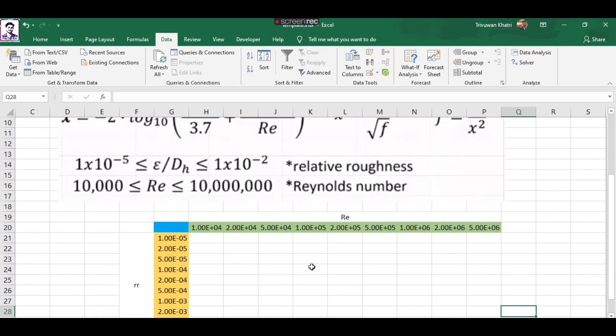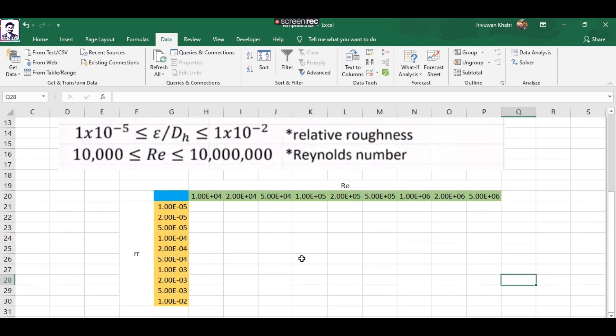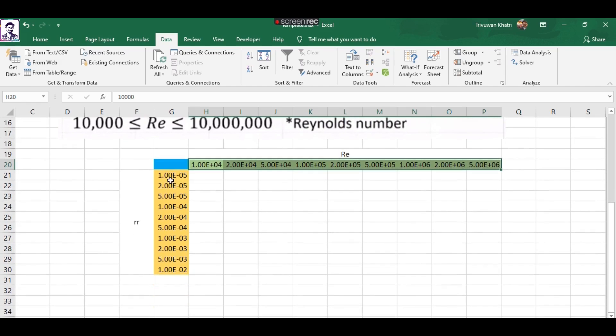For that, we'll be using a special tool in Excel called Data Table. It inputs two-dimensional vectors - in our case, the Reynolds number in the rows and relative roughness in the columns.